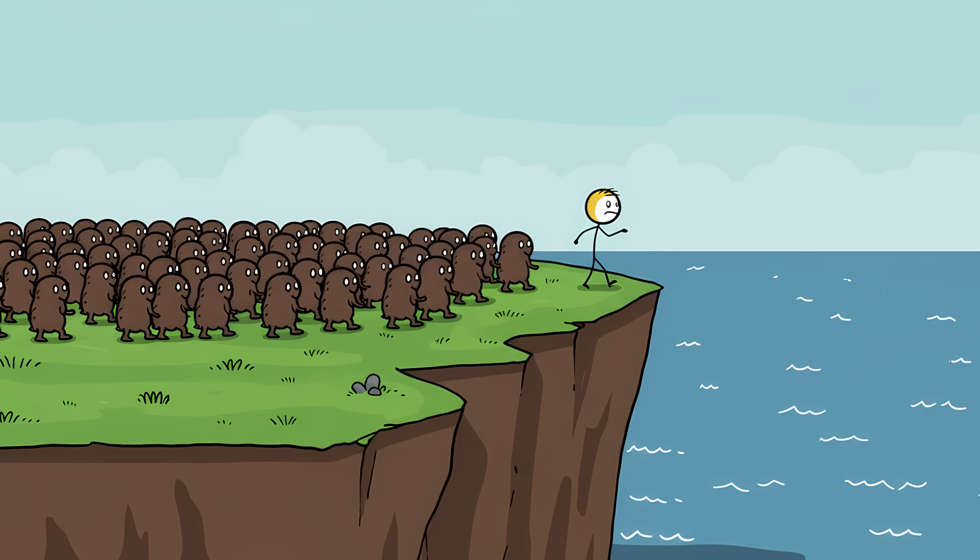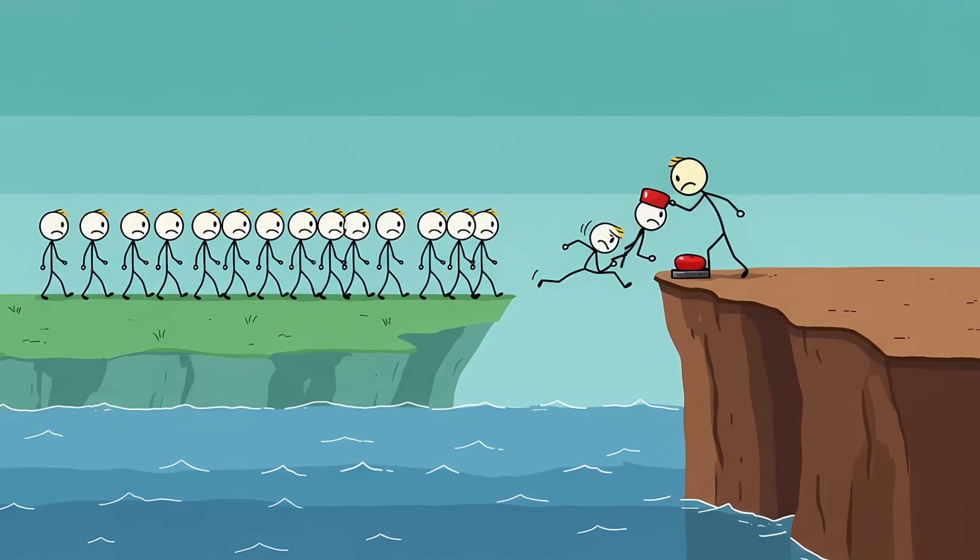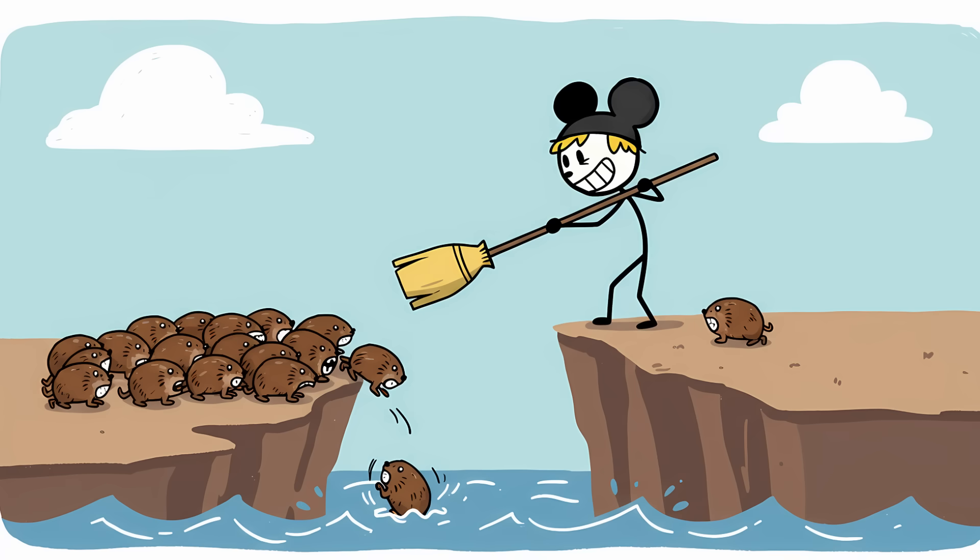There is no image more tragically absurd in the animal kingdom than the lemming. A tiny, furry rodent, driven by some mysterious primal urge, marches with thousands of its brethren to the edge of a seaside cliff. There, without hesitation, they leap into the churning waves below, a mass suicide pact orchestrated by Mother Nature herself. It's the ultimate example of nature's cruel, unfeeling logic. A built-in, self-destruct button for population control.